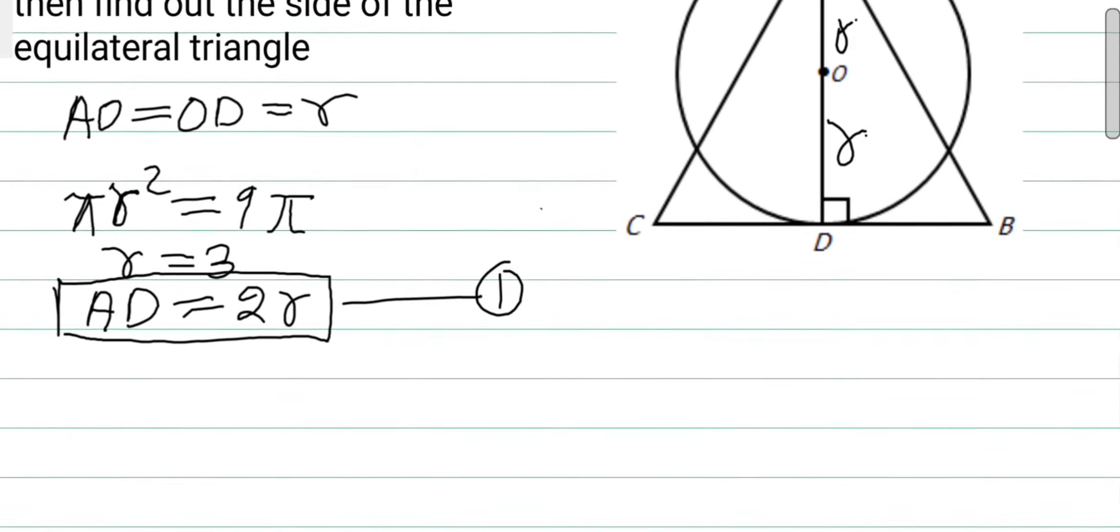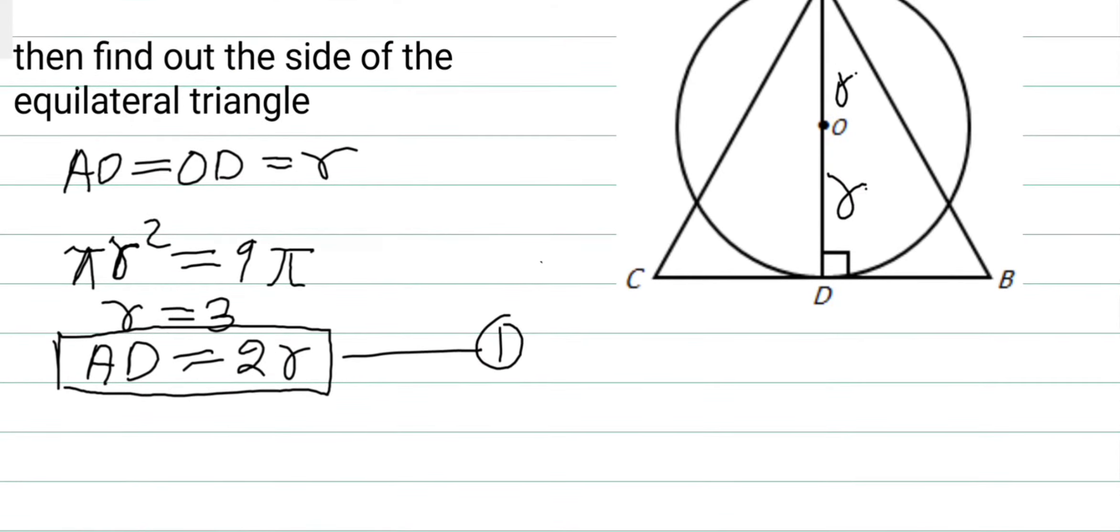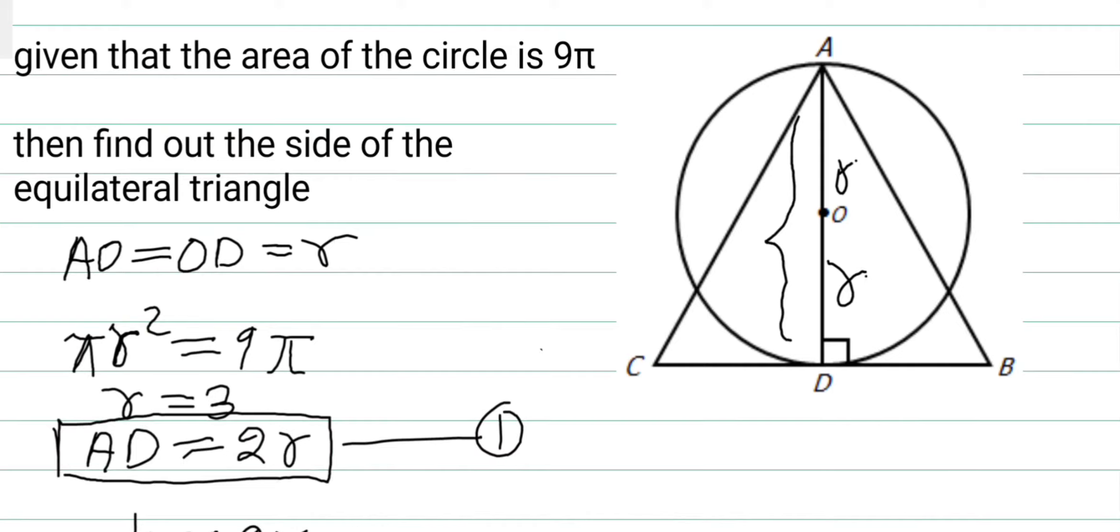But we know that AD is nothing but the height of the equilateral triangle. So AD equals 2R. It means the height of the equilateral triangle, H, equals 2R. So this is the height of the equilateral triangle, which is H.